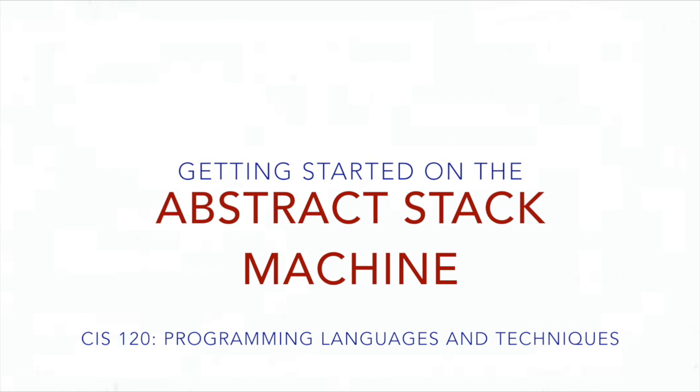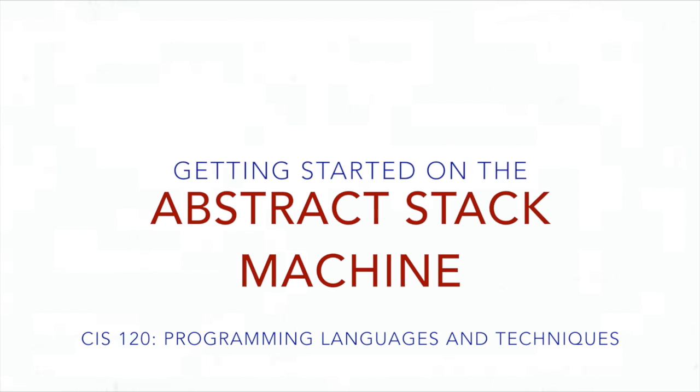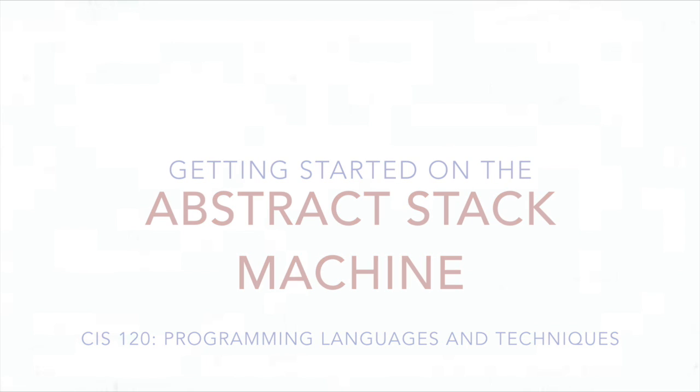So now that we've looked at some more straightforward examples of how the ASM works and how simplifying on the ASM works step by step, let's take a look at one of the main motivations for why we even introduced the ASM, and that is this idea of mutability.